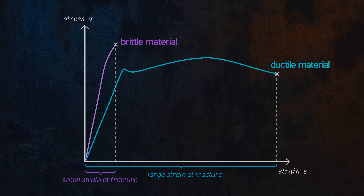There is no defined transition point between ductile and brittle behavior. Typically, a material which has a strain at fracture of less than 5% is considered to be brittle.